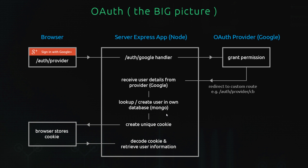Now I want to dive a little deeper to look at what's going on behind the scenes. Same as before, a user starts off in the browser and signs in with Google. But before we redirect them straight to the Google consent screen, we're going to redirect them to another route on our application. I've called it '/auth/provider', where 'provider' is a placeholder for whatever service they want to sign in with — so in this case it's going to be '/auth/google'. This block represents our Node application.